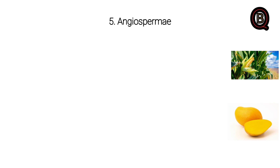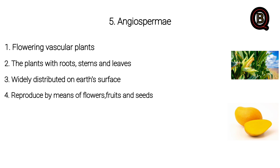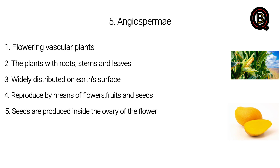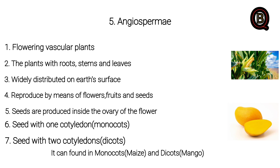Angiosperms: flowering vascular plants. The plant has roots, stem, and leaves. Widely distributed on the Earth's surface. Reproduced by means of flowers, fruit, and seeds. Seeds are produced inside the ovary of the flowers. Seeds with one cotyledon are monocots; seeds with two cotyledons are dicots. Examples include monocots such as maize, and dicots such as mangoes.